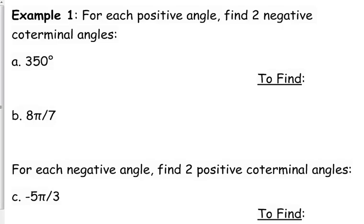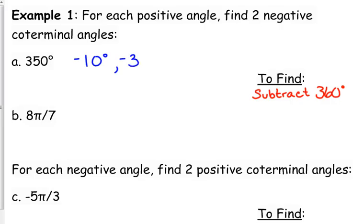We're given two positive angles — one in degrees, one in radians — and we want to find two negative co-terminal angles. If we want negative, we need to subtract 360 degrees. We subtract 360 degrees from 350, so negative 10 degrees is a co-terminal angle. If we want a second negative co-terminal angle, we subtract 360 degrees again, giving us negative 370 degrees.